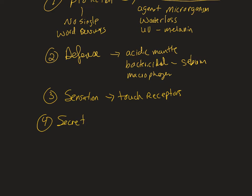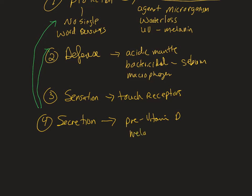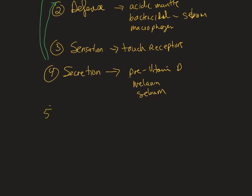There is a lot of overlap between functions. For protection and defense, components of secretion play a role, like the sudoriferous glands and sebaceous glands. The skin also performs conversion and secretion of pre-vitamin D, which is then sent to the liver and kidneys for processing. We also secrete melanin, sebum, and two kinds of sweat — an oily kind and a watery kind.